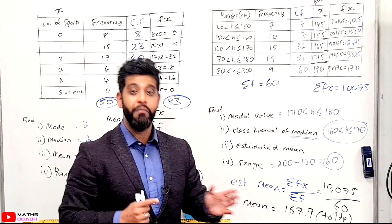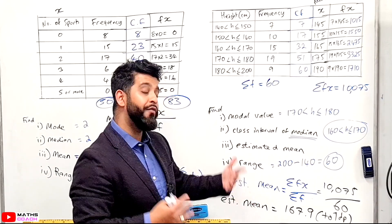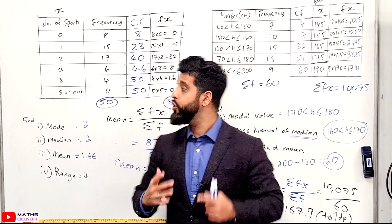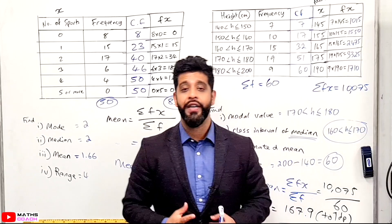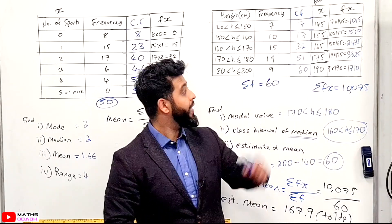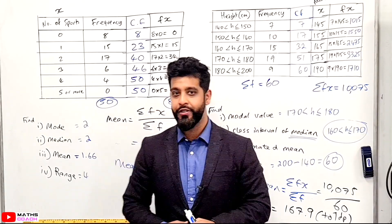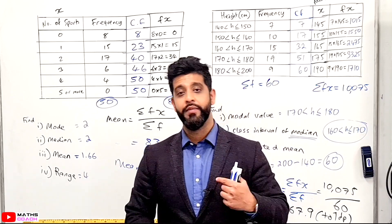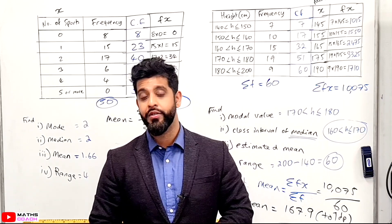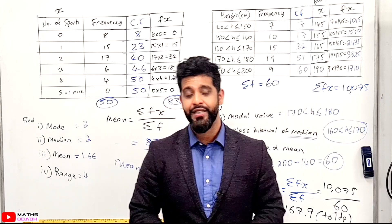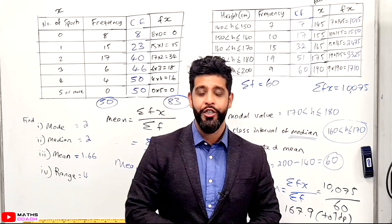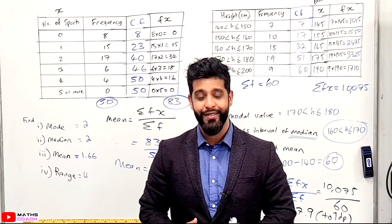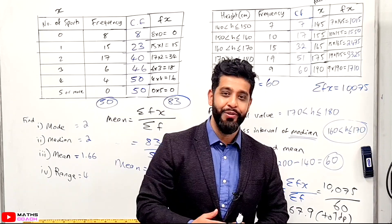That's one of the advantages of having this mean — it points to a specific value. Hopefully you've enjoyed this lesson. You've seen two different examples of how to find averages from a frequency table, including one which is a grouped frequency table. If you like this video, please give it a thumbs up, subscribe, and turn on bell notifications. See you in the next one — bye for now.